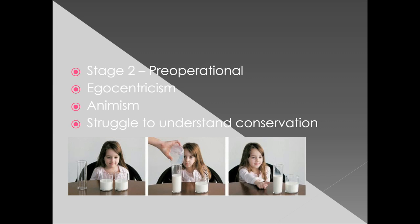Another key characteristic of the preoperational stage is animism — when non-living objects are brought to life. This is notable with kids and their stuffed animals, playing games or make-believe. Children at this stage also struggle to understand conservation. For example, a girl has two equal glasses of milk; one is poured into a taller, skinnier glass, and she thinks the taller glass has more milk because it looks bigger. She struggles to understand that different sizes can contain the same amount of a substance.